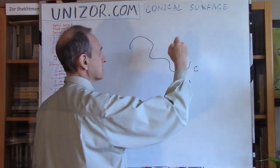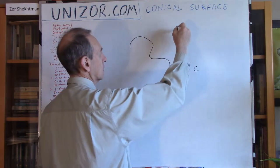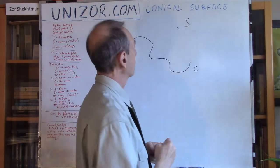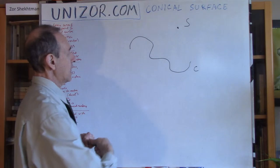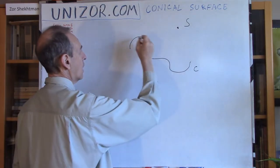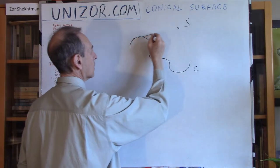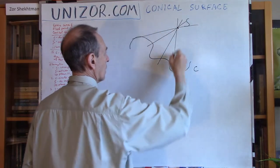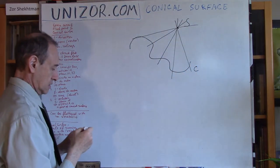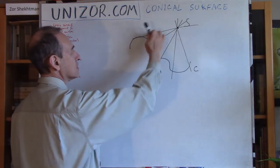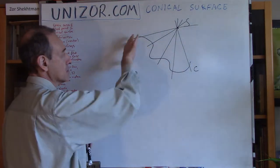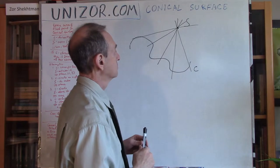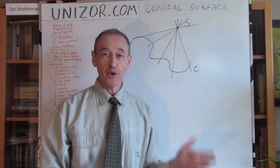We also assume that somewhere else we have a fixed point — let's call it S. What I'm going to do is the following: every point on this curve I will connect with a straight line to this fixed point S. All these points on all these straight lines are actually forming some kind of a surface. And that's it — this surface is called a conical surface.